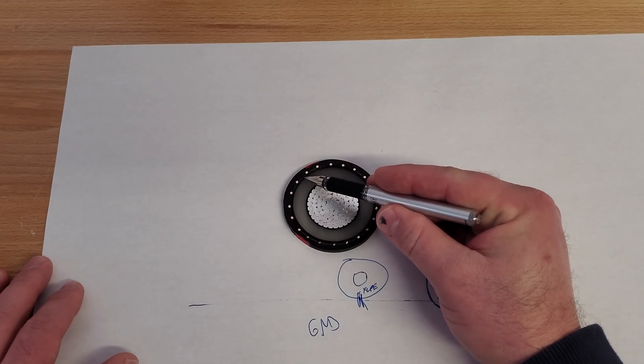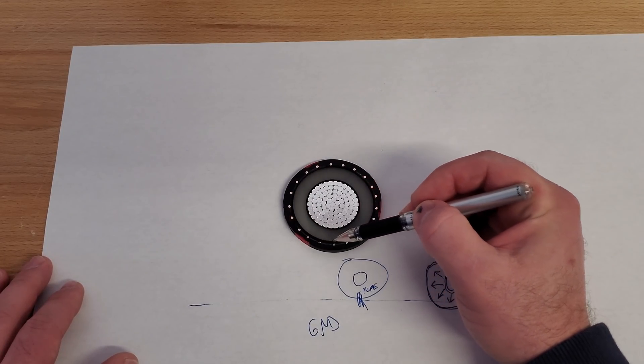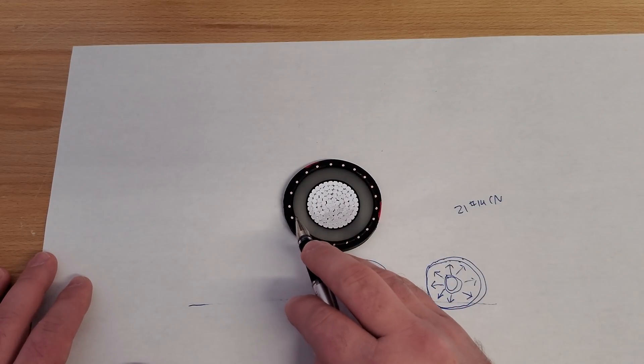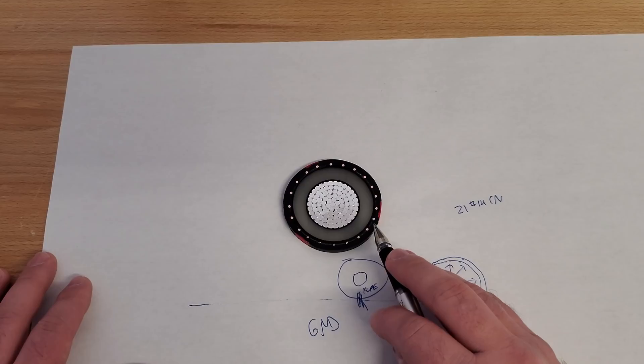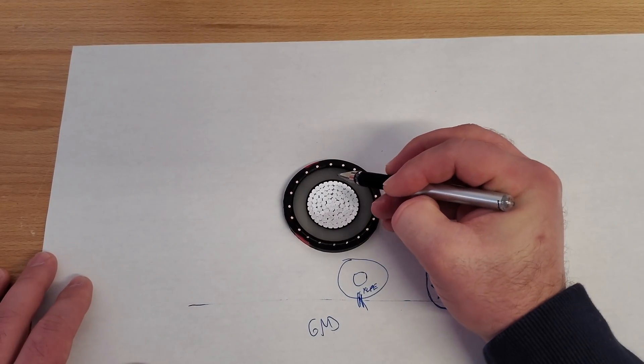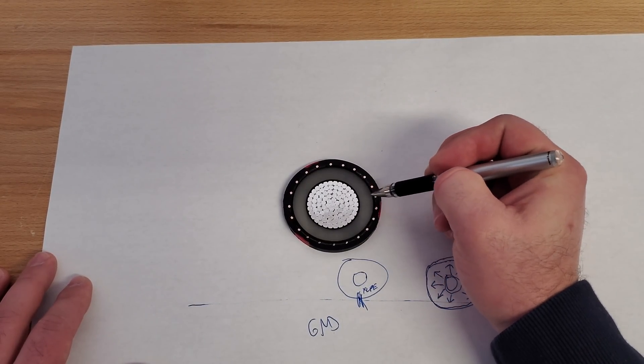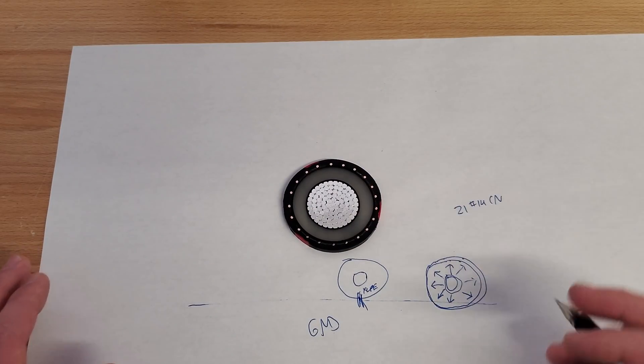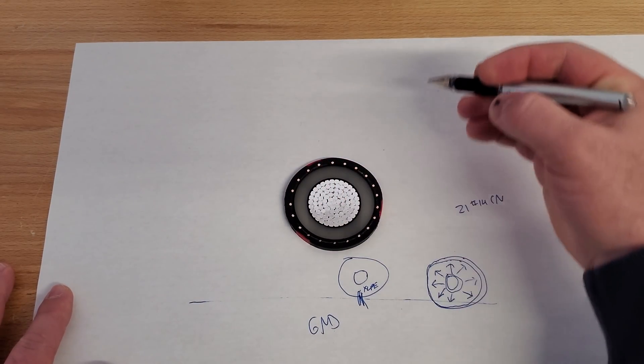So very important that this layer basically keeps this insulation shield grounded. Again, it's evenly distributed around that semi-con layer. So as the lines of flux bleed through the insulation evenly, they're ultimately bleeding to these concentric neutrals, which at the terminations on either side are grounded. So this is the actual grounded layer.